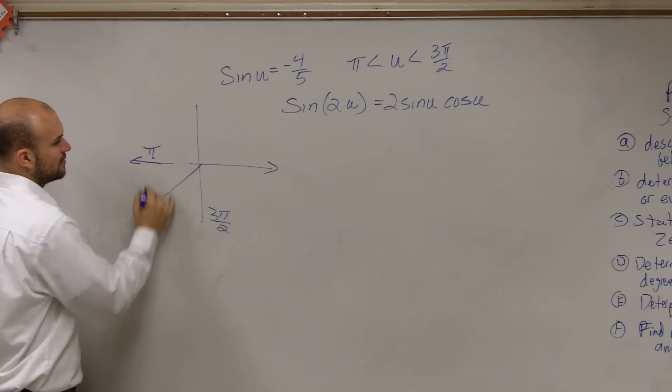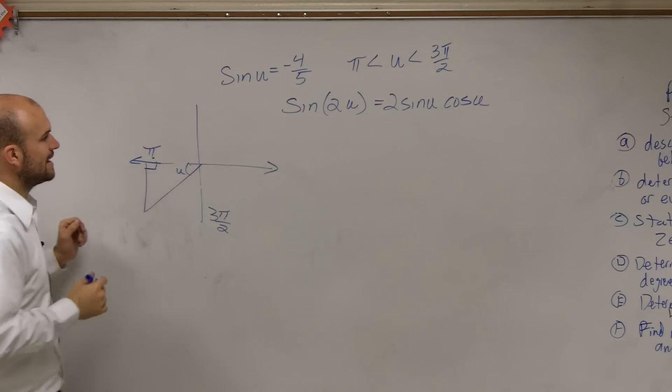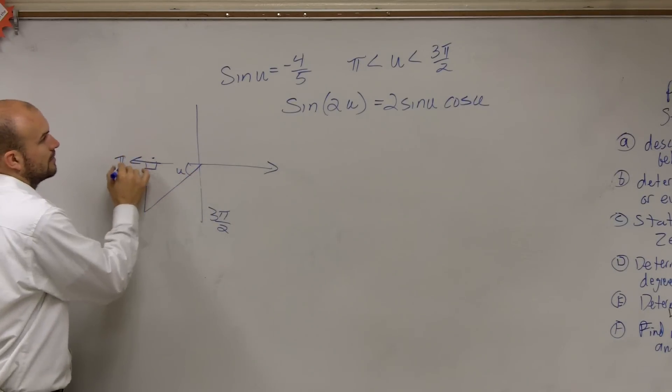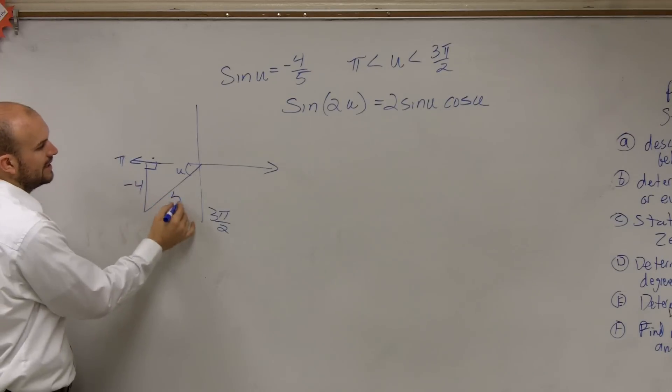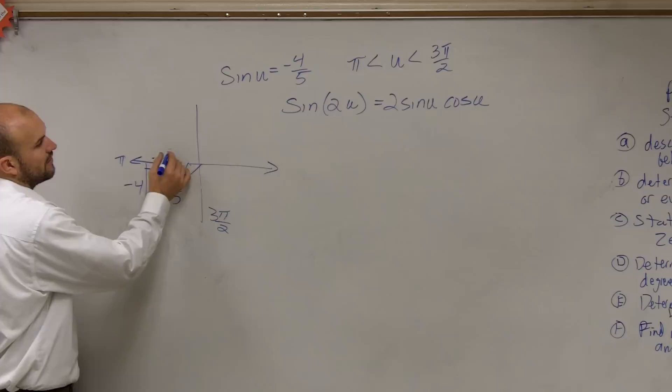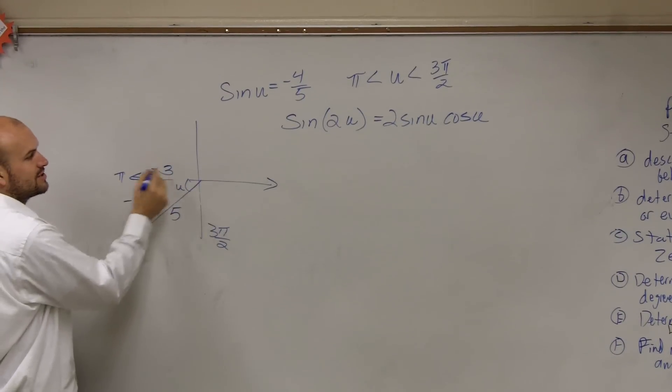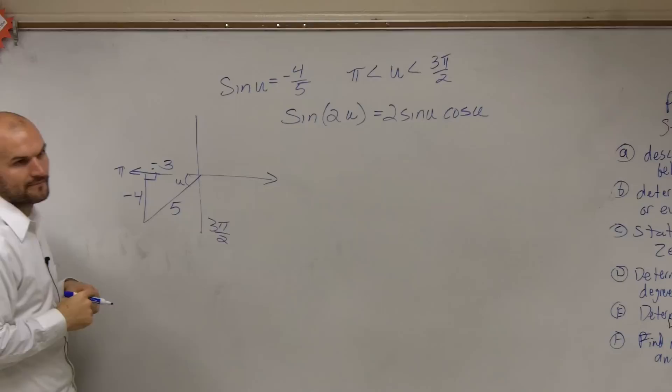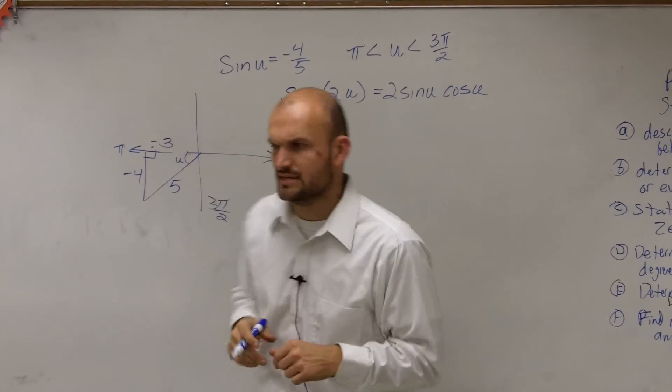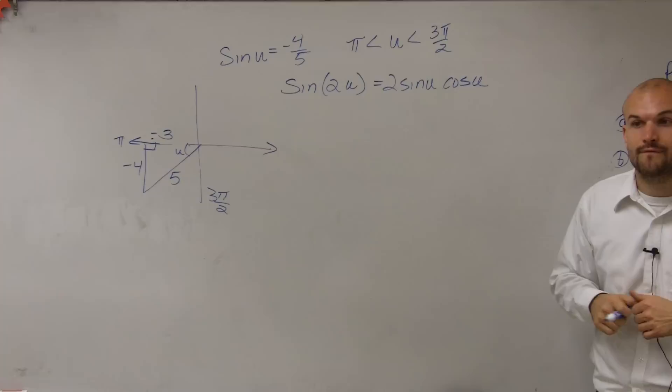So if my angle's in the third quadrant, it's going to look something like this, where here's my angle u, here's my right angle. And it says sine is negative 4. Here's 5. This is a Pythagorean triple. So therefore I know this value has to be 3. But since my triangle's in the third quadrant, it's going to be negative 3. Does that kind of make sense, what I did? Or you could use the Pythagorean theorem and figure it out.